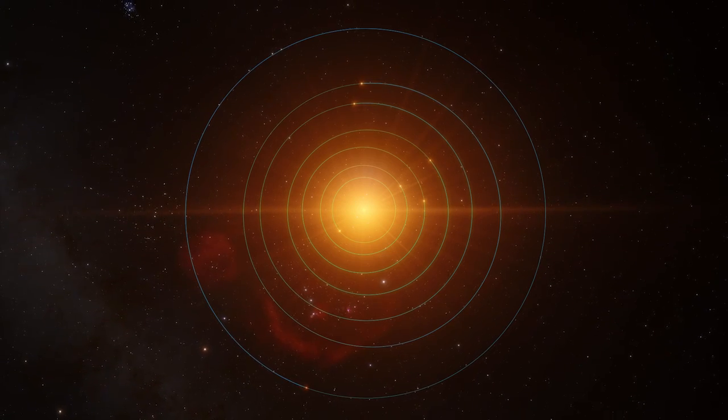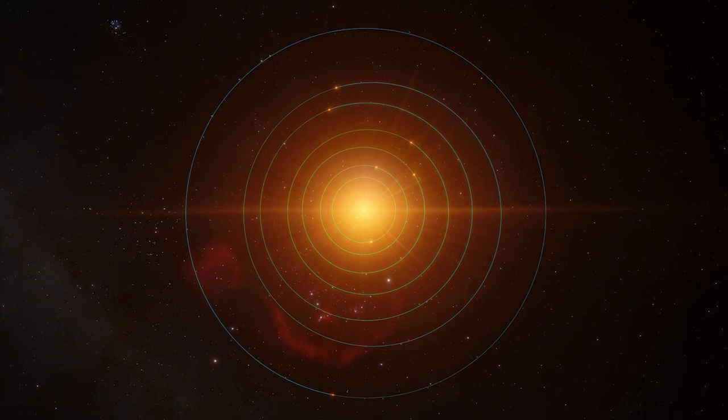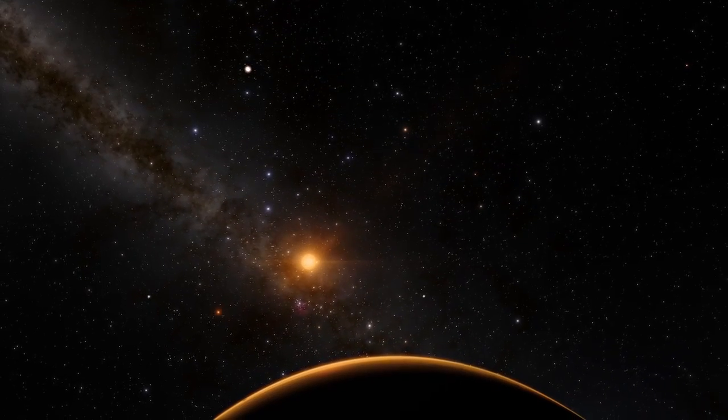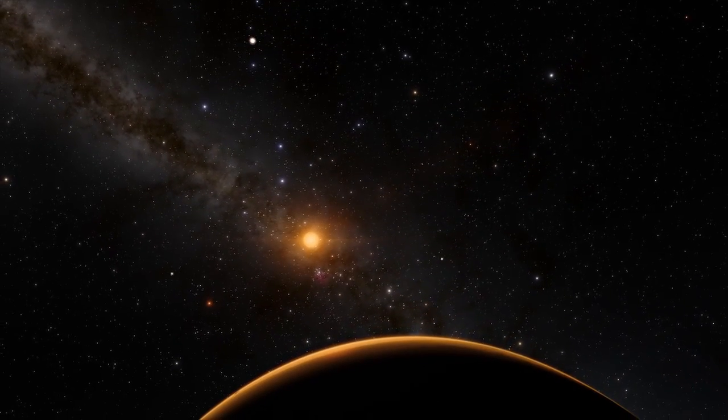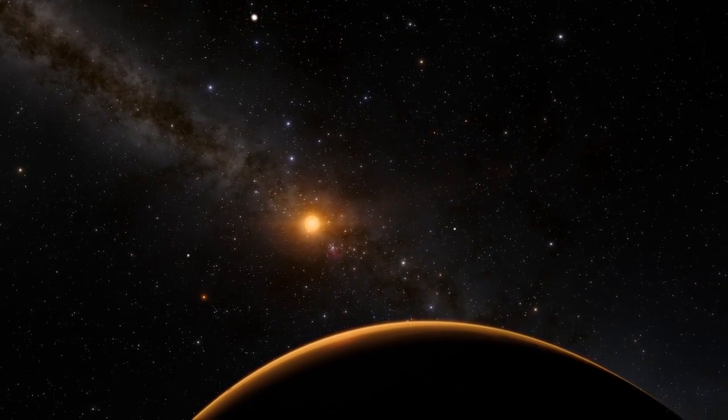Although the planets' orbits are very close to their parent star, its low energy output means that the illumination levels they receive are similar to Venus, Earth, and Mars.